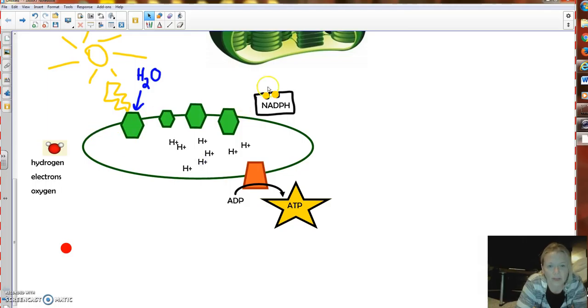We're in the thylakoid. There's our electrons. There's our oxygen. I'm just going to bring over the hydrogen here. A couple of them, right? Okay, so we have sunlight coming down, breaking a water molecule. The energy from the sunlight breaks this water molecule.